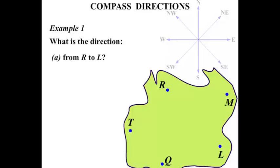In part A, from R to L. Well, from R, so we're starting from R and we're going towards L. So that's the arrow direction there. If we repeat that arrow direction on our compass, we can see that it is South East. The direction is South East.